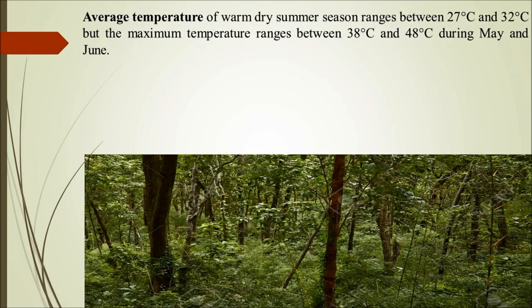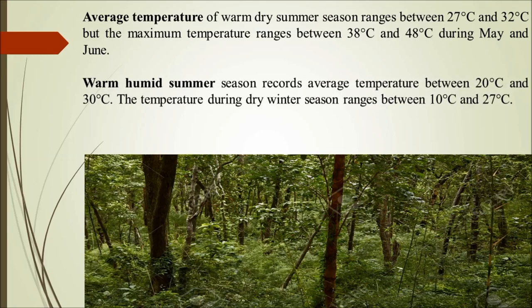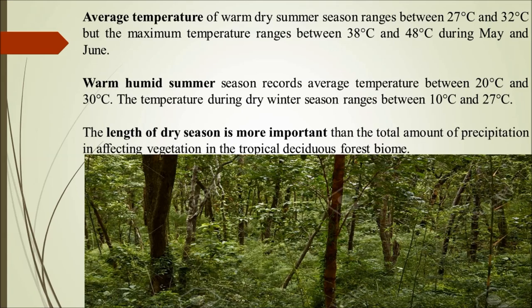The average temperature of warm dry summer is 27 to 32°C, but the maximum temperature may go up to 48°C in May and June. The warm humid summer season records an average temperature of 20 to 30°C, while temperature during dry winter falls down to 10°C. The length of the dry season is especially important because the total amount of precipitation affecting vegetation is critical — the dry season is more lengthy while the wet rainy season is of short duration.